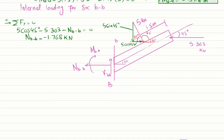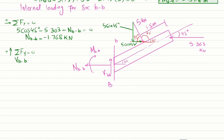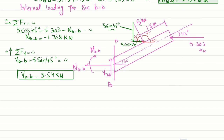To find VBB, apply equilibrium along the y-direction with upward force positive. VBB plus the vertical component 5.303 times sine 45 minus the 5 kilonewton load's vertical component 5 times sine 45 equals zero. Solving gives VBB equal to 3.54 kilonewtons.